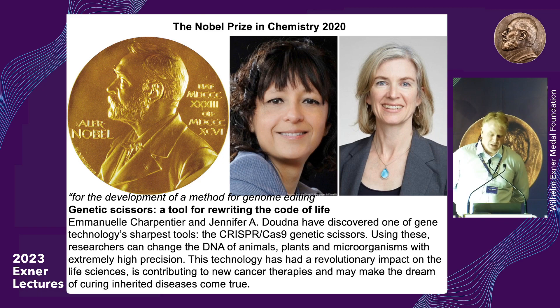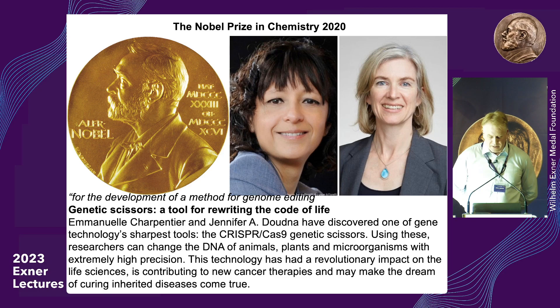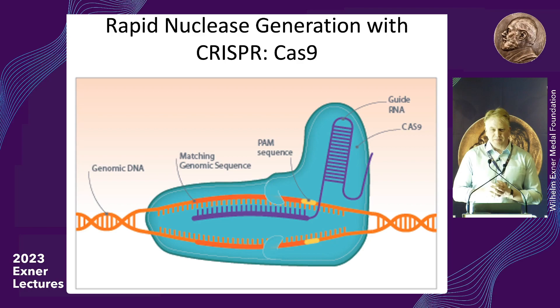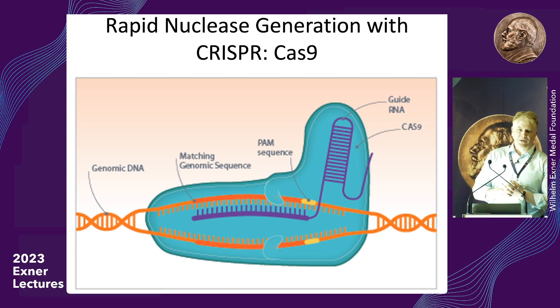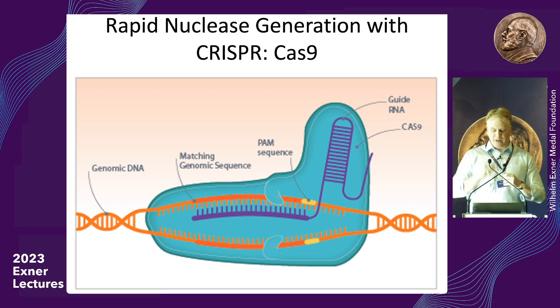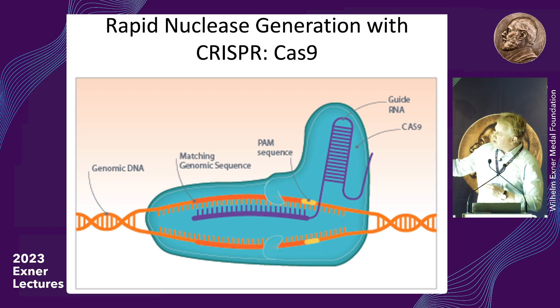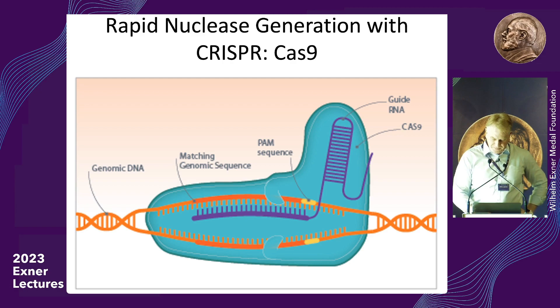The Nobel Prize in 2020 was given to Emmanuelle Charpentier and Jennifer Doudna for the use of CRISPRs for genome editing. CRISPR-Cas9 is really a bacterial enzyme designed to help deal with viral attack, but the way we can use it is as a programmable pair of double-strand DNA scissors. You program it with what we call the guide RNA, which complexes with Cas9 and tells it where to cut. If we program the guide RNA correctly, we will cut exactly where we want.